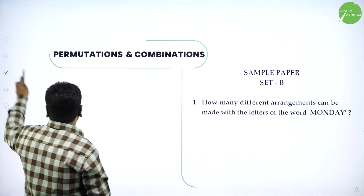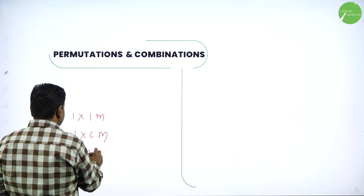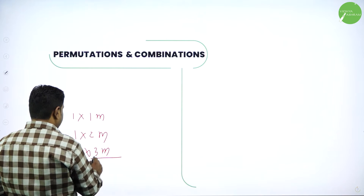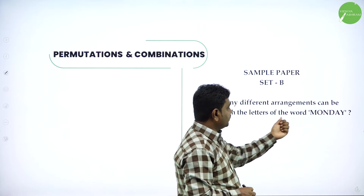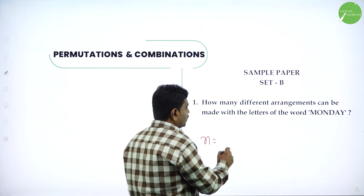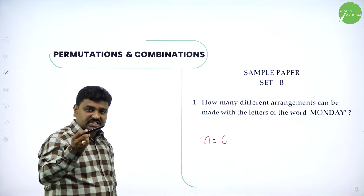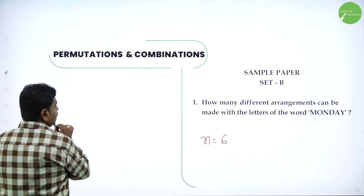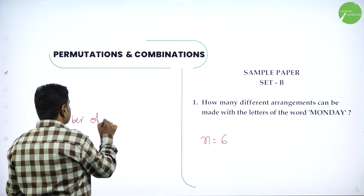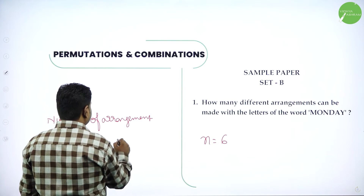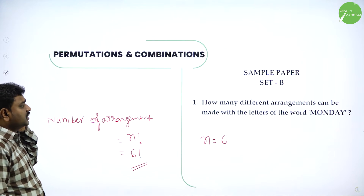Set A has one 1-marker, one 2-marker, and one 3-marker — totaling 7 marks. In Set B: how many different arrangements can be made with the letters of the word Monday? Monday has 6 letters and no letter is repeated. So the number of arrangements is 6 factorial. Since it is a 1-marker, you can leave the answer as 6 factorial.